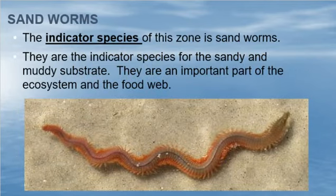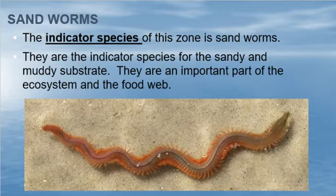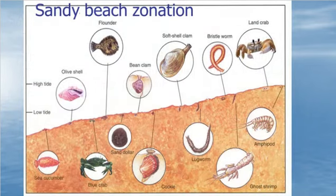The indicator species of the sandy zone are sandworms — they're indicator species for the sandy and muddy substrate. They can live in the mud. They're an important part of the ecosystem and the food web. We dissected these guys earlier in the year, with their funny little frilly legs. And the sandy beach zonation — let's look at what's under the sand.